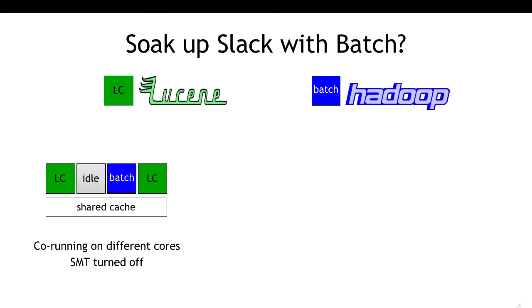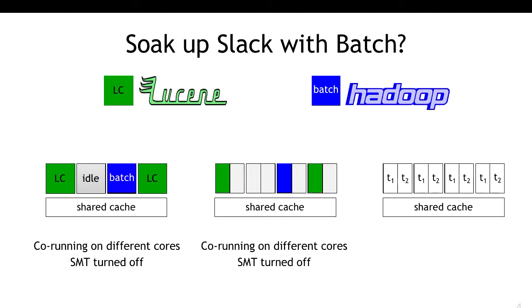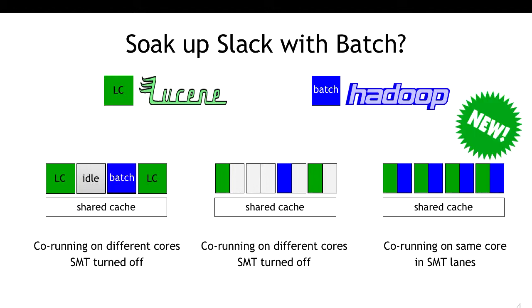From an SMT perspective, they either don't use half of SMT threads or keep some cores totally idle. What we want is to have latency-critical and batch workloads run nicely together on the same core with SMT enabled, ensuring the batch workload does not ruin the latency-critical workload. Whether we can achieve that is the research question. Why can't you just put them together on one SMT and make them run nicely?